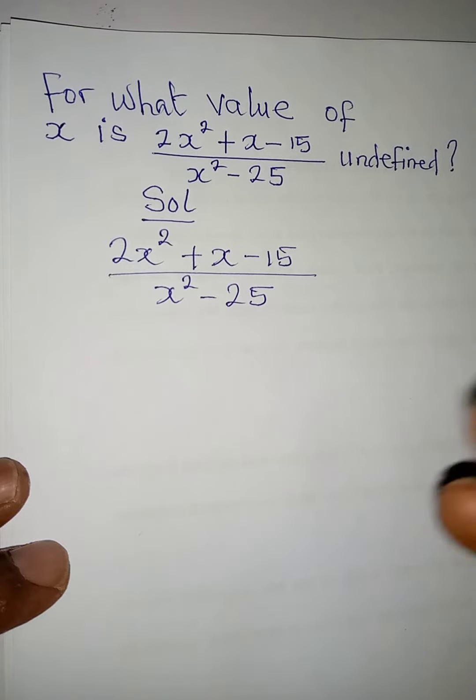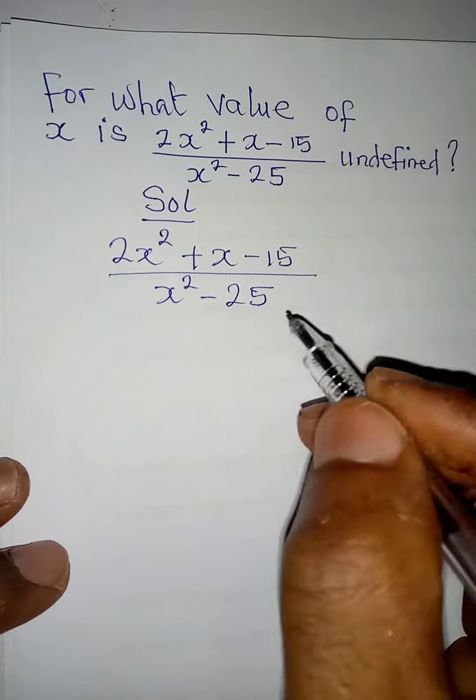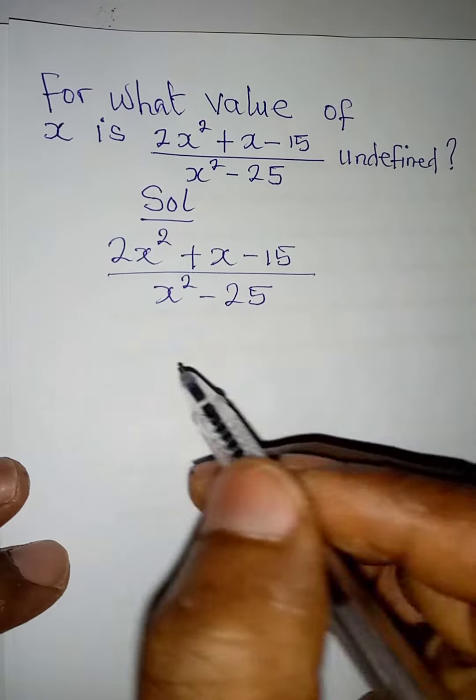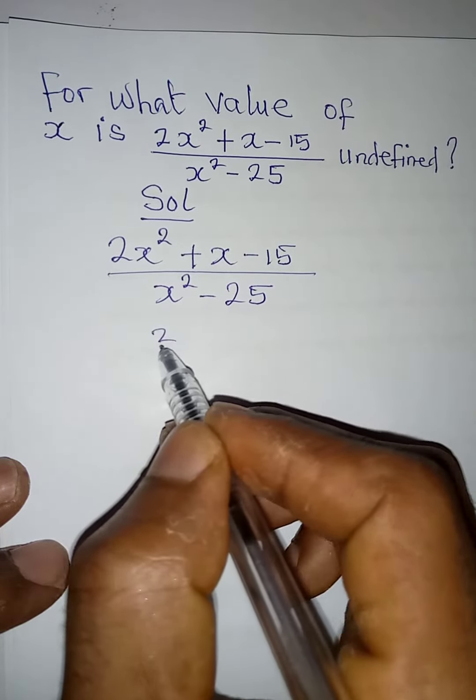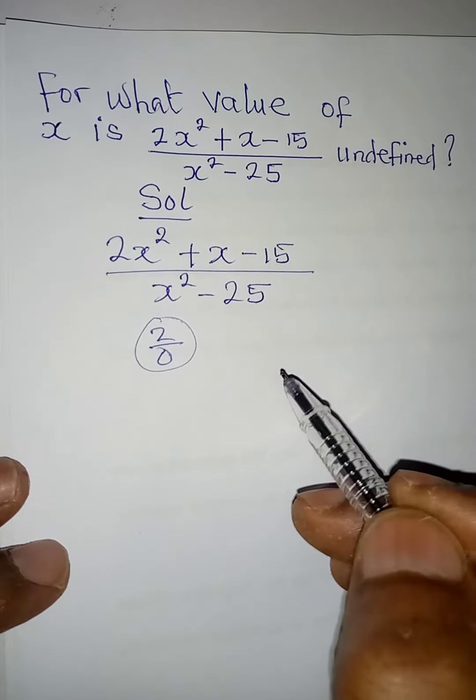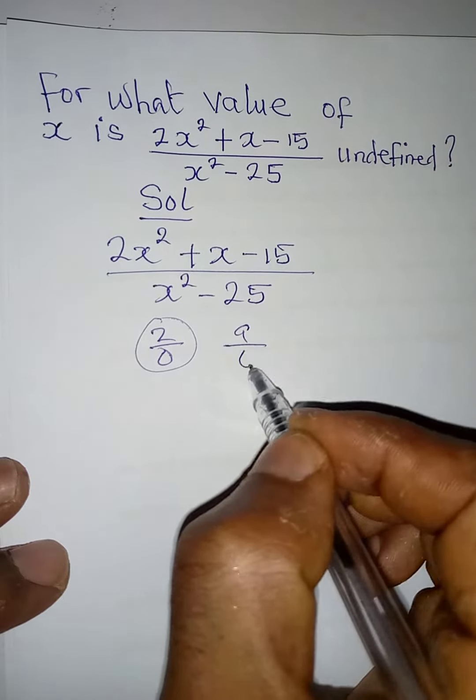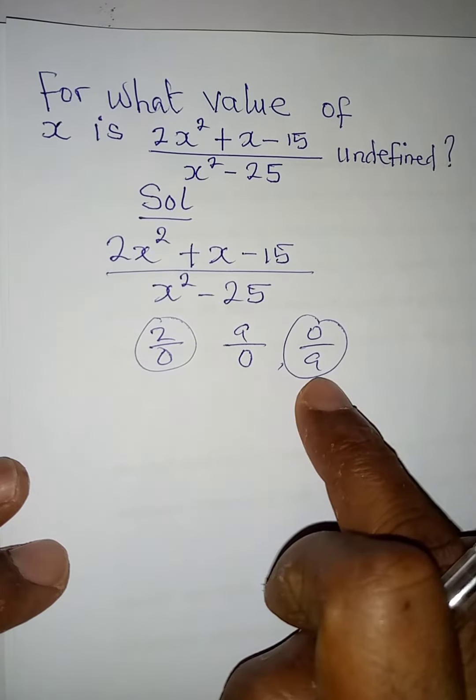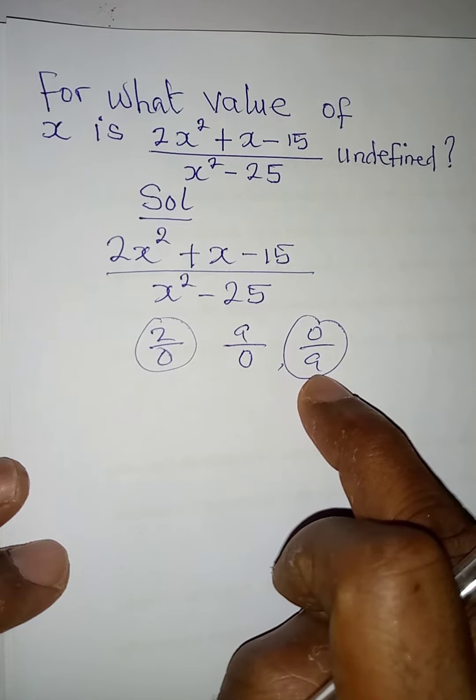Now for an expression or for a fraction to be undefined, then it means that the denominator must be equal to zero. For example, if you have anything like 2 over 0, this is undefined because the denominator is equal to 0. A over 0 is also undefined, but 0 over a, this is not undefined, this is actually defined.